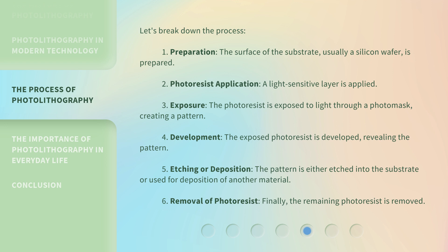Step 4: Development — the exposed photoresist is developed, revealing the pattern. Step 5: Etching or deposition — the pattern is either etched into the substrate or used for deposition of another material. Step 6: Removal of photoresist — finally, the remaining photoresist is removed.